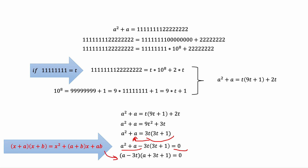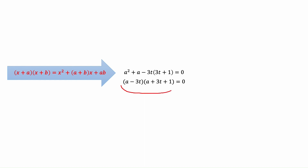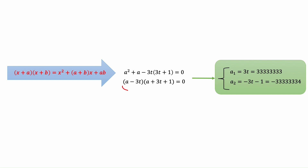We are going to use this formula to factor the equation into two multiplications. For this product to equal zero, we have two cases: one parenthesis equals zero or the other equals zero, giving us two roots. The first root: the first parenthesis equals zero gives a₁ equals 3t, which is eight threes — because t was defined as eight ones. The second root: the second parenthesis equals zero gives a₂ equals negative 3t minus one, which is this corresponding number.